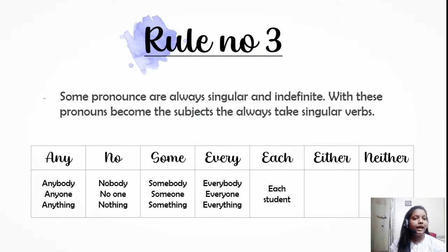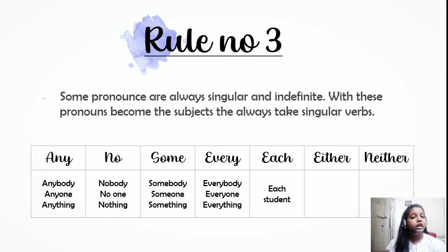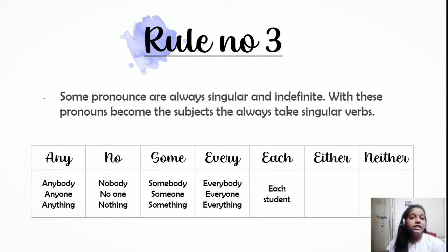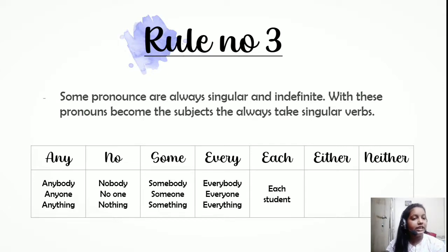Similarly, 'nobody,' 'no one,' 'nothing,' 'someone,' and 'everyone' are all singular. Many people consider 'everyone,' 'everybody,' and 'everything' to be plural, but that is not correct — they are singular subjects and must take singular verbs. Likewise, 'each' — as in 'each girl,' 'each student,' 'each country' — is always singular. For 'either' and 'neither': if they are used without 'or' and 'nor' respectively, they must be singular, for example, 'either of the boys has not completed the homework.'